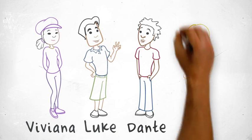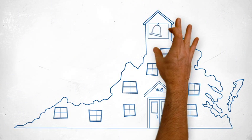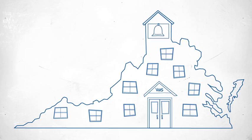Meet Viviana, Luke, Dante, and Simone. These students all enter Virginia's school system at the same time and grow up together all the way through high school.